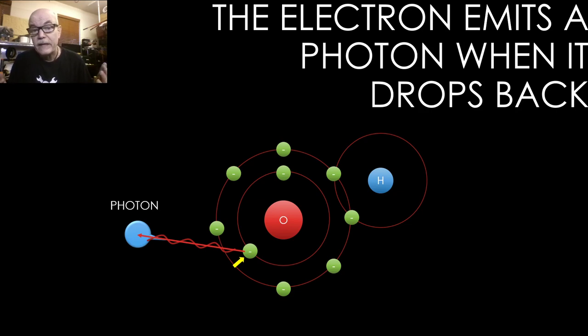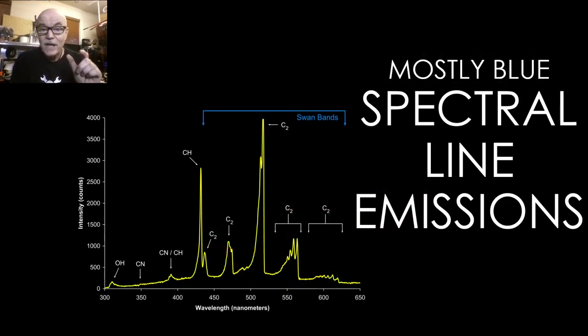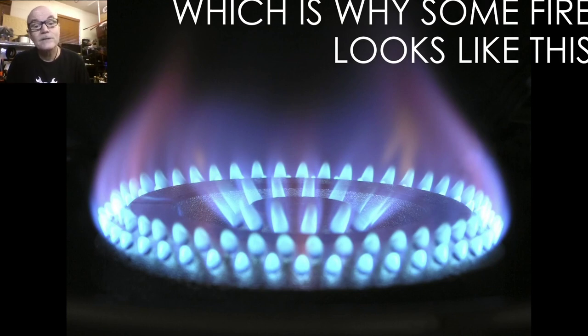And the energy that got it to the outer ring, remember, nothing really gained, nothing really lost, just transformed, is shot out as a photon. Photon? Light. Photons can be in a variety of frequencies, they might not be in the visible frequency. But in this case, we know that we can measure very exactly the change in energy between those energy levels of shells. And we use what's called spectral line emissions to measure them, which means we can tell what color we should be getting. And when we measure it, we see that the swan bands, the areas that are generated from those transmissions, show up as blue wavelengths, which means we get blue, or mostly blue, spectral line emissions, which is why some fire looks like this.